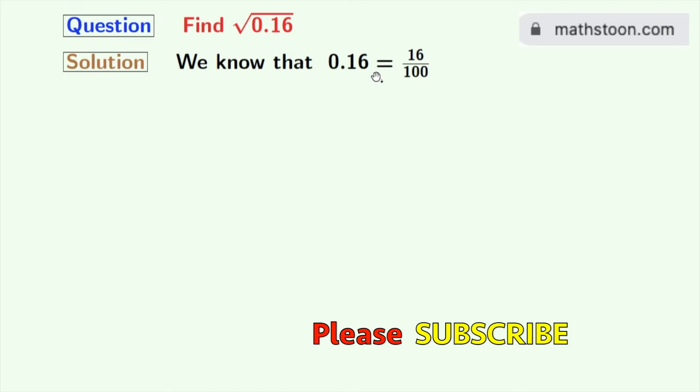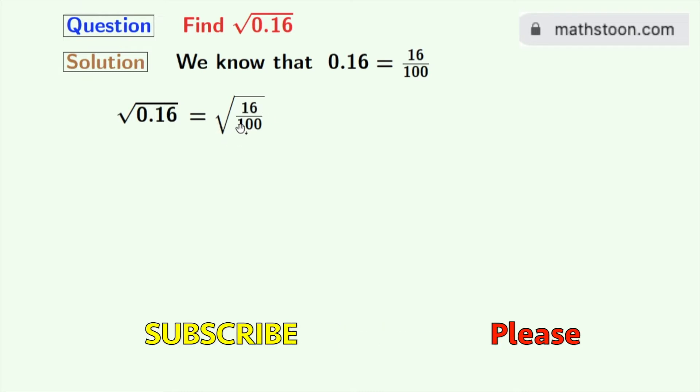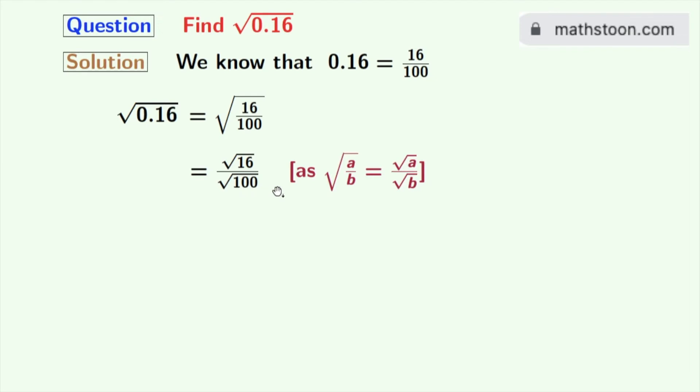Doing so, we get square root of 0.16 equals square root of 16 by 100. Now we will rewrite this fraction as square root of 16 by square root of 100, using the rule: square root of a by b equals square root of a by square root of b.